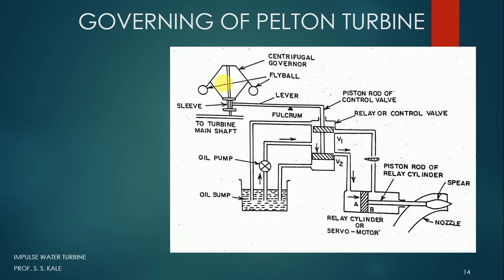Now let's understand what is meant by governing of the Pelton turbine. It is required that the Pelton turbine speed remains constant because the Pelton turbine is connected to the electric generator. The output shaft of the Pelton turbine is connected to the electric generator, which takes mechanical energy from the turbine and converts it into electrical energy. Whatever generator is used requires a constant shaft speed, because if the speed keeps changing, the electrical power generated may not be constant.